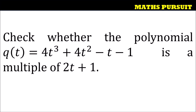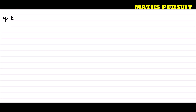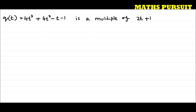The question is asking us to check whether the polynomial q(t) = 4t³ + 4t² - t - 1 is a multiple of 2t + 1 or not.